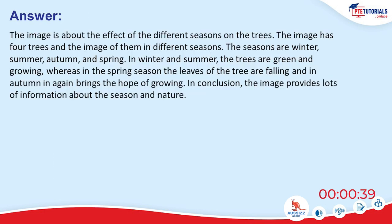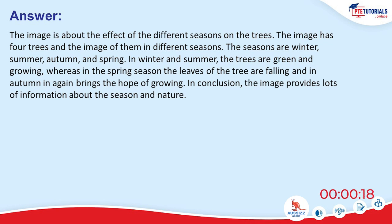The image depicts the effect of different seasons on trees. It has 4 trees shown in different seasons: winter, summer, autumn, and spring. In winter and summer the trees are green and growing, whereas in spring the leaves of the tree are falling, and autumn again brings the hope of growing. The image provides lots of information about seasons and nature.